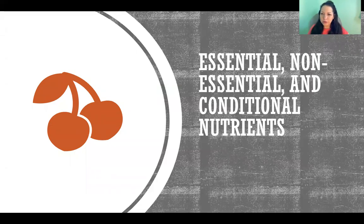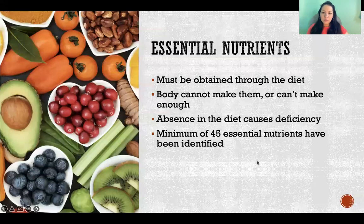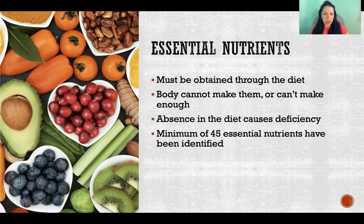Hello, in this video I'm going to talk about essential, non-essential, and conditional nutrients. So a nutrient is essential if we must get it through the diet. And it's a nutrient, meaning that if we don't have enough, or we have absence of that nutrient for long enough, then we have some kind of deficiency.